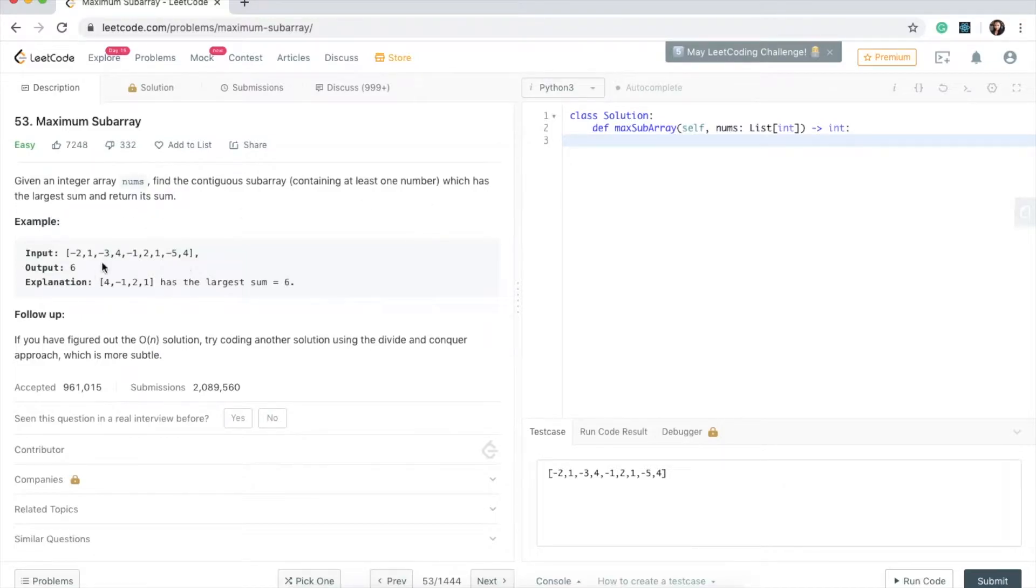Essentially we're given an input array with both positive and negative numbers and we need to find what is the maximum sum I can find from this array if I sum up certain consecutive values.